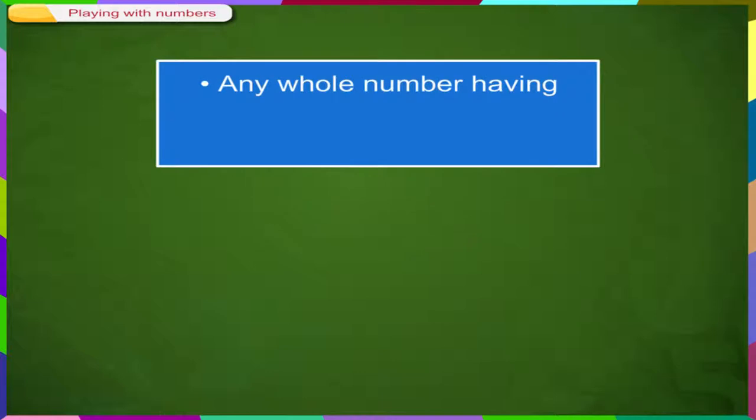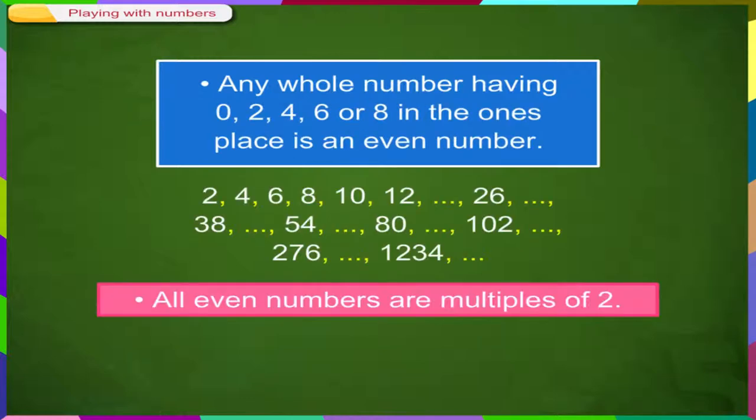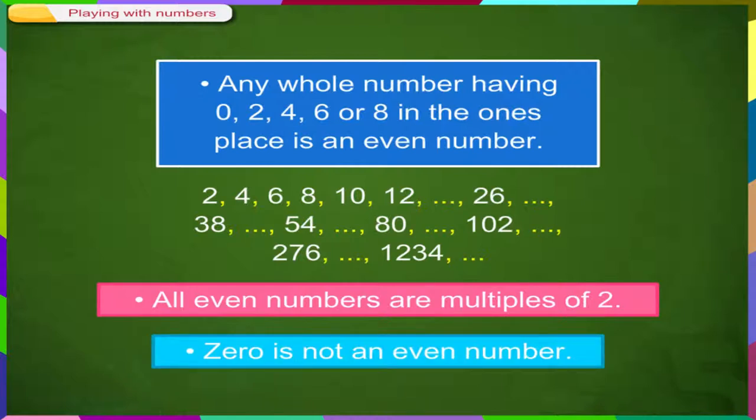Even Number. Any whole number having 0, 2, 4, 6 or 8 in the once place is an even number. All even numbers are multiples of 2. 0 is not an even number.